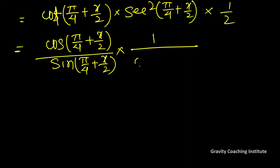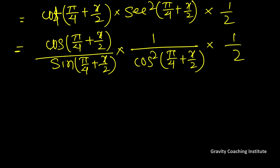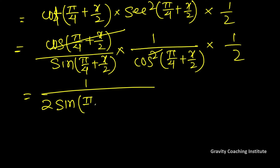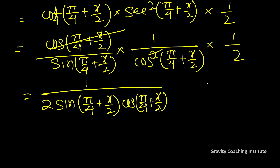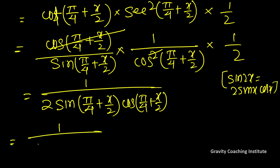Multiplying by 1 over cos²(π/4 + x/2) and 1/2, the cos² terms cancel, leaving 1 over 2 sin(π/4 + x/2) cos(π/4 + x/2). Using the formula sin 2x = 2 sin x cos x, we can write this as 1 over sin 2(π/4 + x/2).